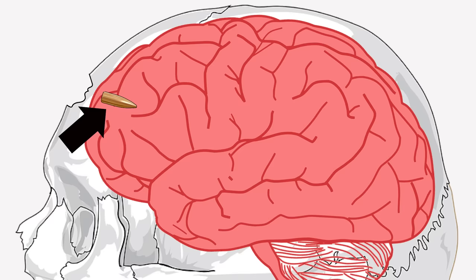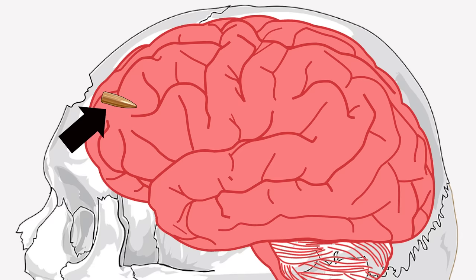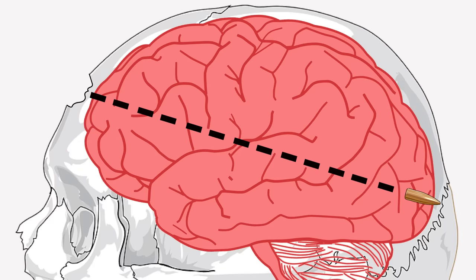Once in the brain, three things can happen to the bullet. One, it can slow and stop. If it loses enough of its energy when it pierces the skull, it will stop in its path inside the brain, probably at the other end of the skull.